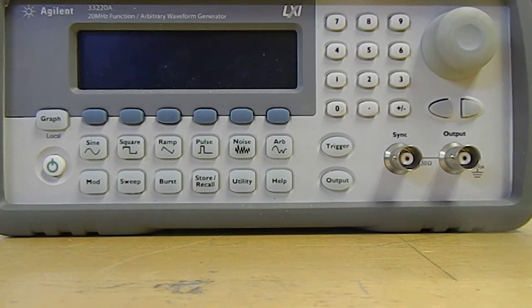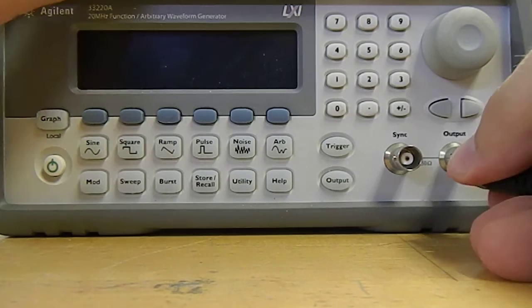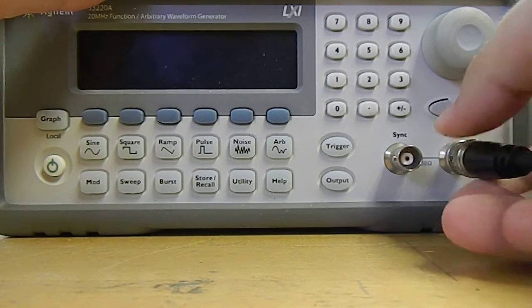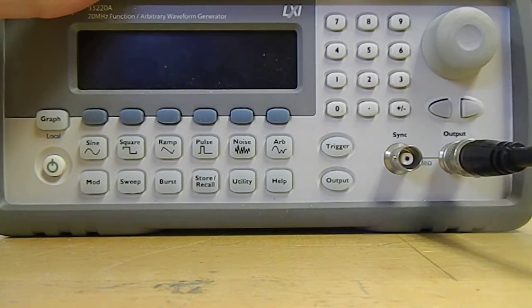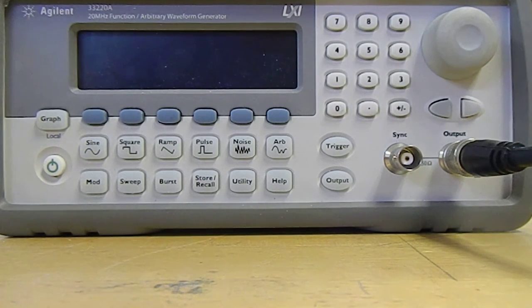This is an instructional video for an Agilent 33220A function generator. First thing you want to do is make sure that it's hooked up to power. And once that is done, you can hook up the output of this, which you can read is right here, using BNC to whichever circuit or device you're working with.